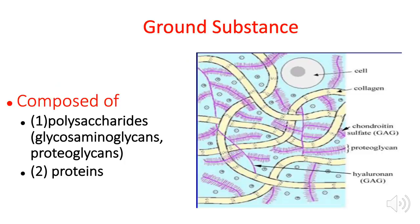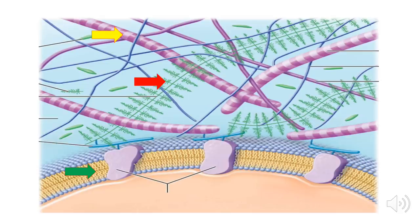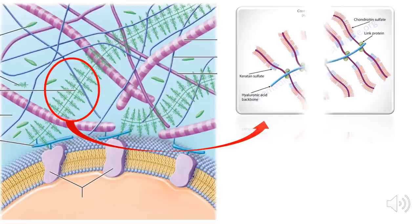What are the different components of the ground substance? They can be divided into two: polysaccharides or carbohydrates, and proteins. In terms of polysaccharides, we have two types: glycosaminoglycans and proteoglycans. This is a schematic diagram of the ground substance. The yellow arrow points to one of the fibers in the connective tissue; the green arrow points to the cell membrane of one of the connective tissue cells; and the green-colored structure linked by the red arrow is the ground substance. In the schematic diagram, the brush-like structures are the glycosaminoglycans.